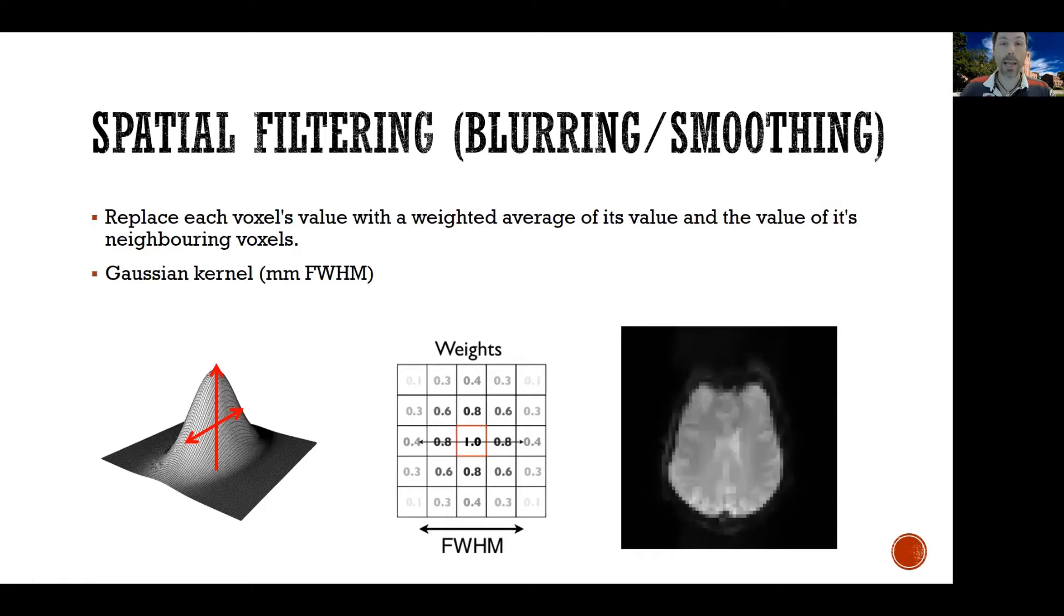Lastly, you should know that the way in which we talk about smoothing, we typically describe it in terms of millimeters, full width half max. So for example, I might smooth my data and say I'm going to smooth my data five millimeters, full width half max.